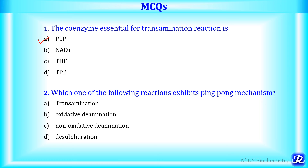MCQ 2: Which of the following reactions exhibits a ping-pong mechanism? The options are transamination, oxidative deamination, non-oxidative deamination, and desulfuration. In the ping-pong mechanism, the first substrate binds to the active site of the enzyme, a product is formed, that product leaves, and then only the second substrate can bind. The answer is transamination.